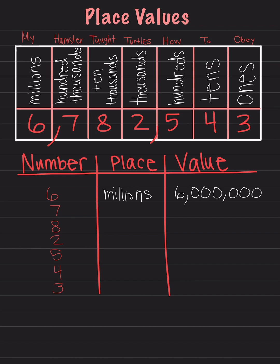Let's go to the 7. The 7 is in the hundred thousandths place — I will abbreviate it with HT. The value of this number will be 7 followed by zeros for the rest of the numbers that come after the 7. We have 00, and we will not forget our comma and we'll add three more zeros. This is 700,000.